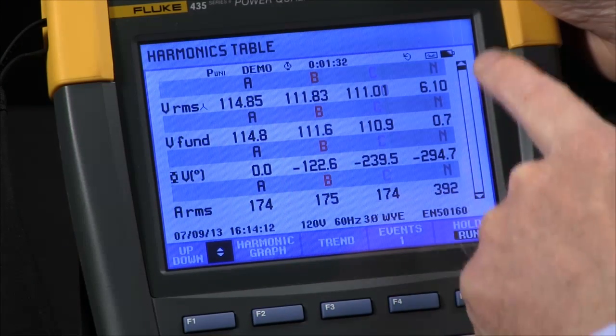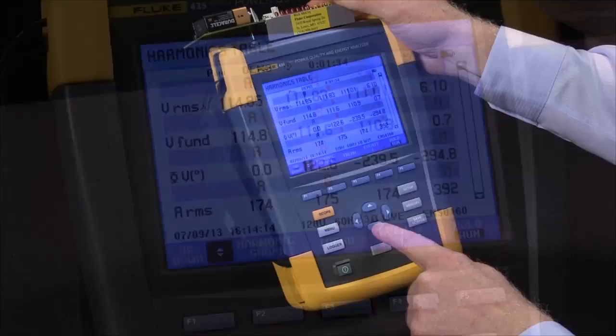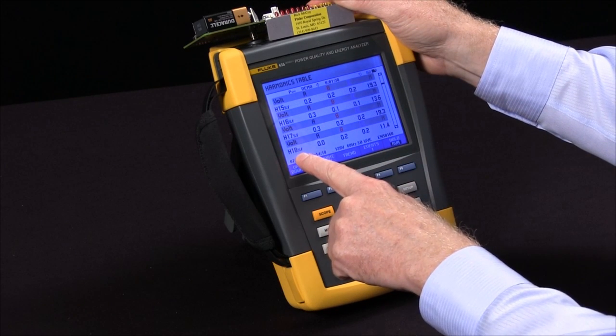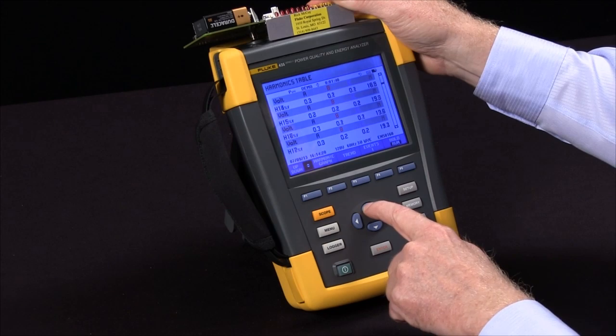There's lots of data in harmonics. The arrow keys will scroll down through this, all the way down to the 51st harmonic, both voltage and current.